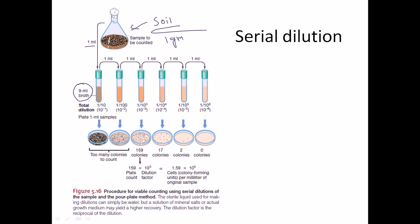We take one gram or one milliliter and put it into the nine milliliters, so the whole mixture becomes 10 milliliters. This solution is very dense, filled with soil bacteria. If we plate it using the pour plate method — the most convenient way to get colonies from a large mixed bacterial culture — it will give us a huge number of colonies to deal with.